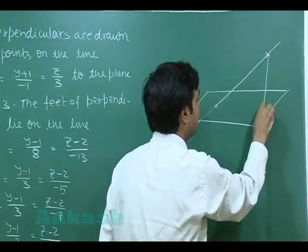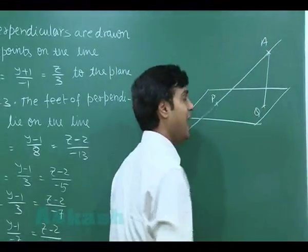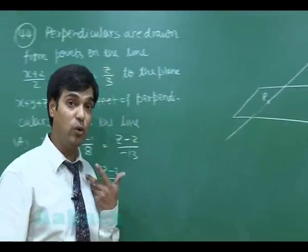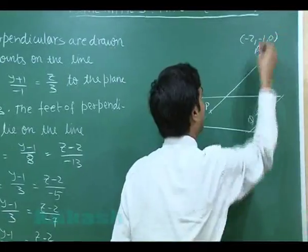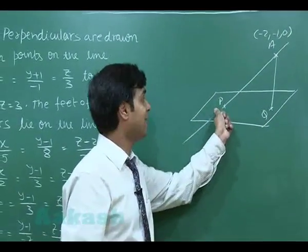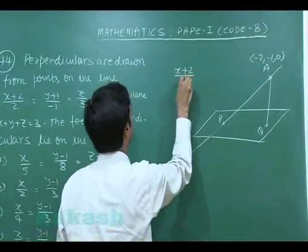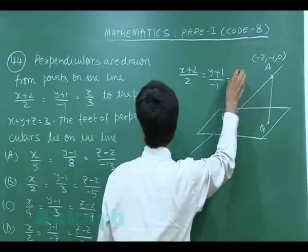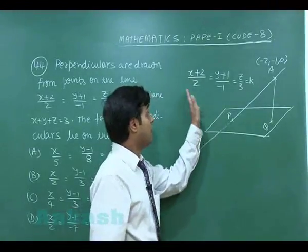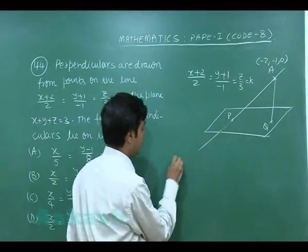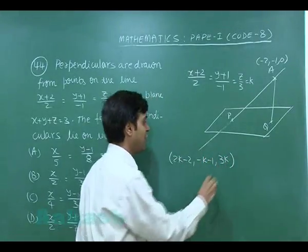Let's mark the points. Point A is the known point on the line, which is (−2, −1, 0). Point P is the intersection of the line and the plane. Writing the line parametrically as x+2/2 = y+1/−1 = z/3 = k, a general point on the line is (2k−2, −k−1, 3k).